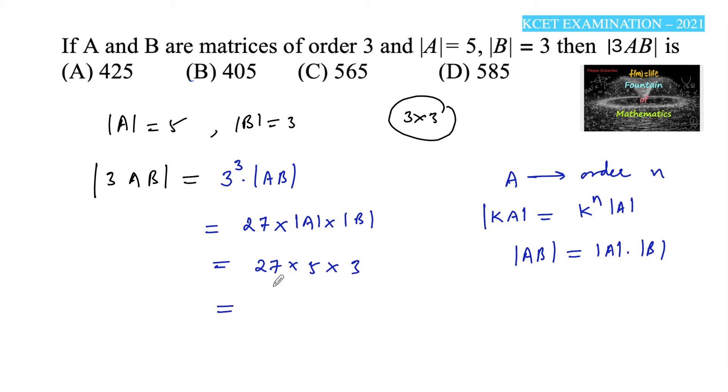So 27 times 5 gives us 135, and 135 times 3 is 300 plus 105, which equals 405.